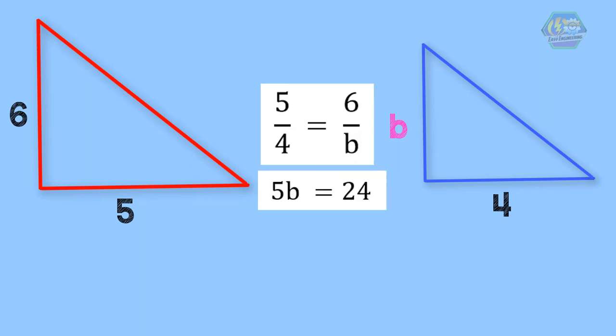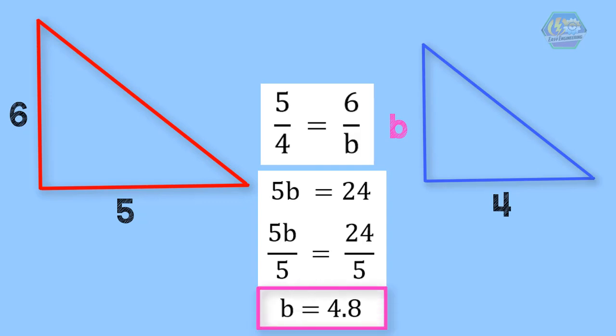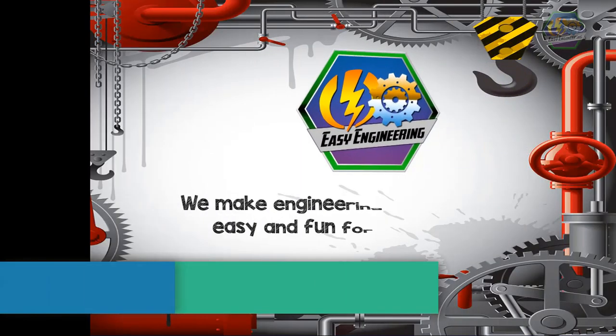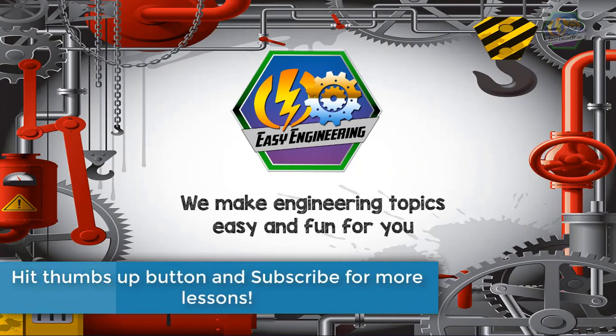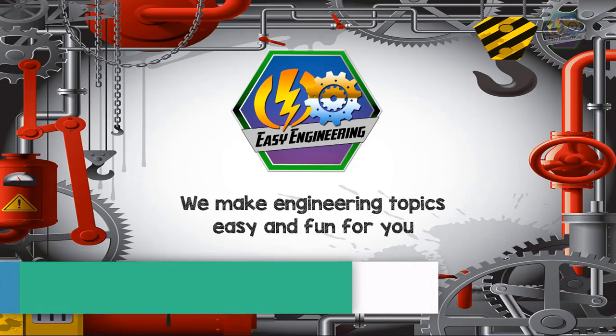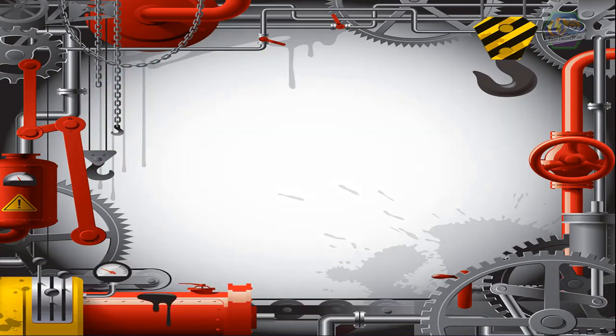To find the value of the variable b, we need to divide both sides by 5. Therefore, the value of variable b is 4.8. That's it guys. I hope you learned a lot about proportion. You can also watch other video tutorials here in our channel. Once again, this is Easy Engineering. We make engineering topics easy and fun for you.